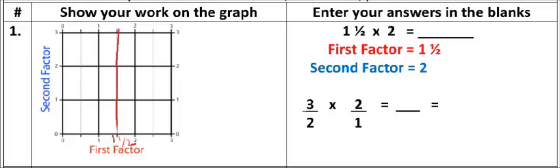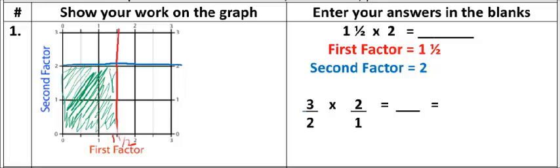So then I'm going to look at the second factor. The second factor says we have times 2. So I'm going to go 0, 1, 2. I'm going to draw a line right across — a little bit higher so you can see it. So there's my 2. Now I'm going to look at this and say, what is contained in that area? We're going to look at filling in this whole square here. This entire area from 2 to 1 and 1 half is what we're looking for. That's going to be our answer.